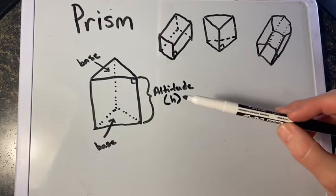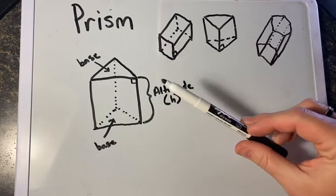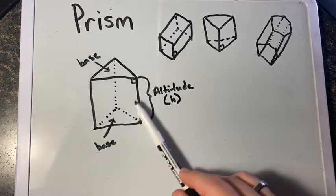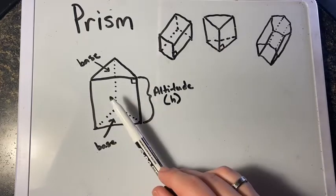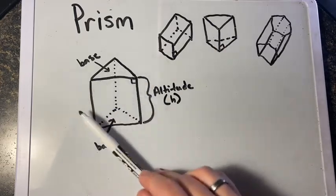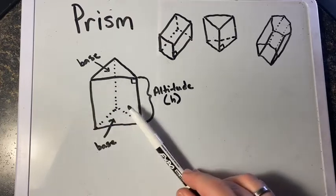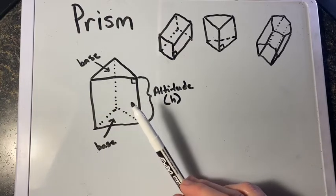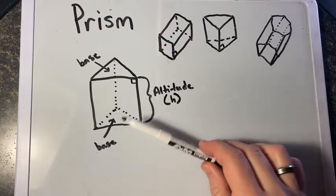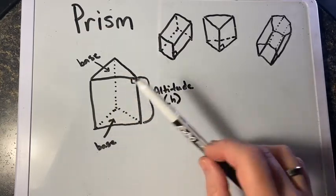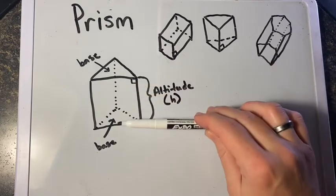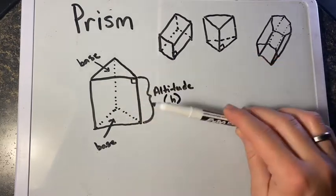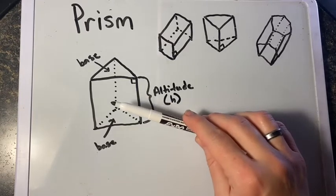The lateral area of a prism is the sum of the areas of all of its lateral faces. In this triangular prism, it has three lateral faces, so the lateral area is the sum of all of its faces. The total area is the lateral area plus the area of the two bases.